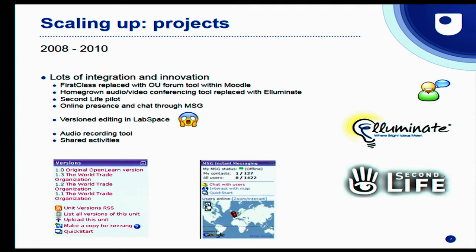We replaced First Class with an OU-written forum tool within the module. There's a bit of an in-joke here, particularly for the Trekkies — we called our tool ForumNG for 'next generation,' and the icon was a little green man, or possibly a little red man. The red-shirted men are the ones that die, so ours was the other way around. We also integrated Illuminate as a replacement for our homegrown audio-video conferencing tool, and piloted with Second Life, using community modules to bridge to those systems.